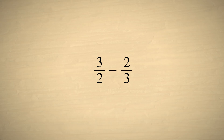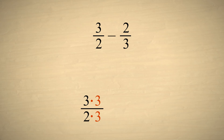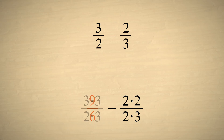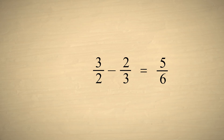One last example: subtracting the fraction three-halves minus two-thirds. Once again, to create a common denominator, we multiply the top and bottom of the fraction three-halves by the denominator of two-thirds, and we multiply the top and bottom of the fraction two-thirds by the denominator of three-halves. This gives us nine-sixths minus four-sixths, which is equal to five-sixths. So three-halves minus two-thirds is five-sixths.